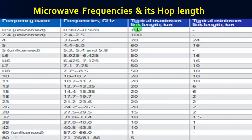These are the microwave frequencies and their hop lengths. The frequency band starts with 0.9 GHz and ends with 80 GHz. This table shows the maximum and minimum link lengths based on frequency. The maximum link length is 100 km and the minimum link length is 1 km.